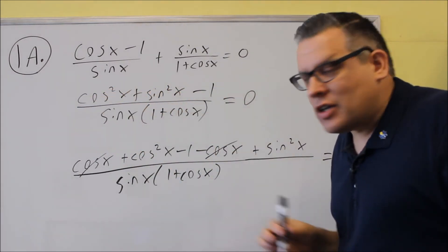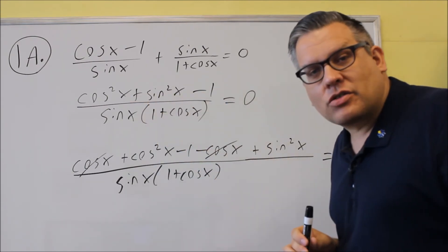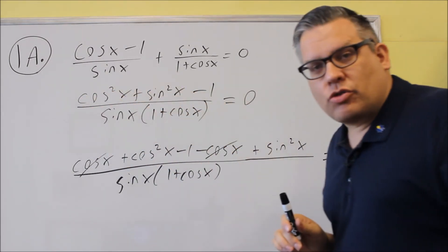Now one that you're going to use here is the identity for cosine squared plus sine squared. If you look at your list of identities, this whole thing is equal to a 1.